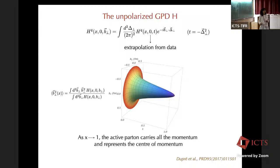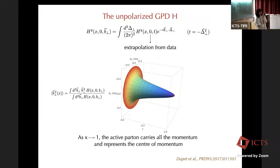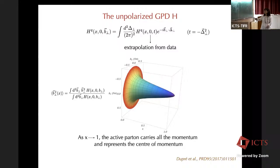This is the unpolarized GPD, with x and B-perp (Bx and By) forming the transverse plane. As a function of x, the distribution takes the shape of a hat. This is actually not peculiar — it comes from momentum conservation. When x goes to 1, the active parton carries all the momentum of the proton, and it goes to coincide with the center of momentum. When x equals 1, the active parton is localized at the center of the proton.